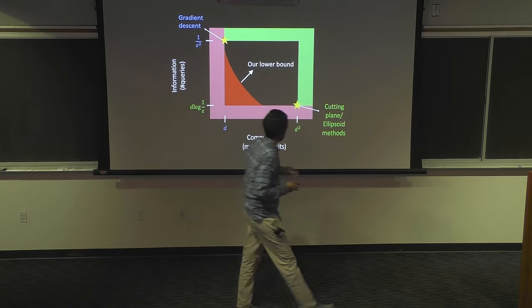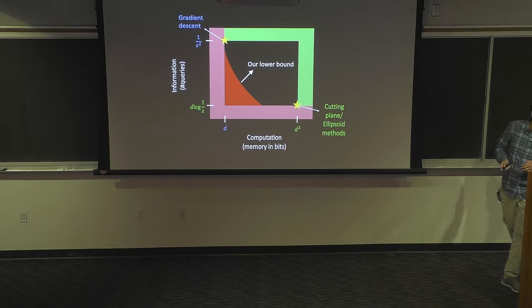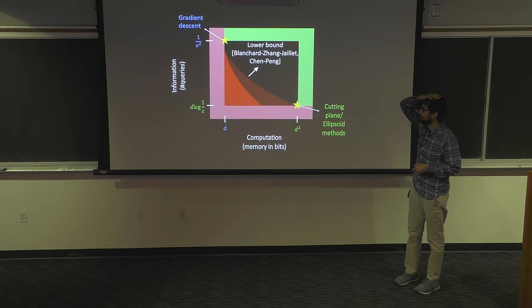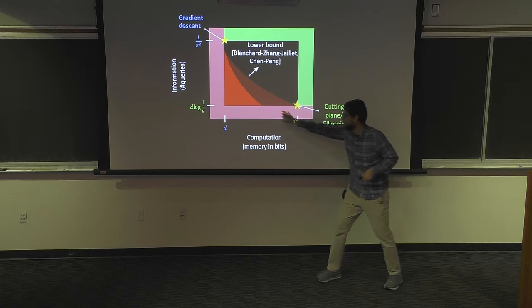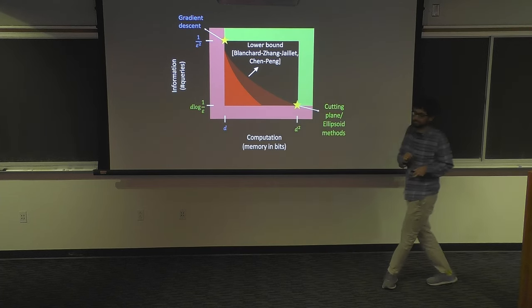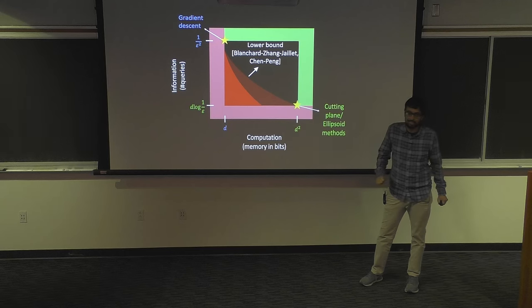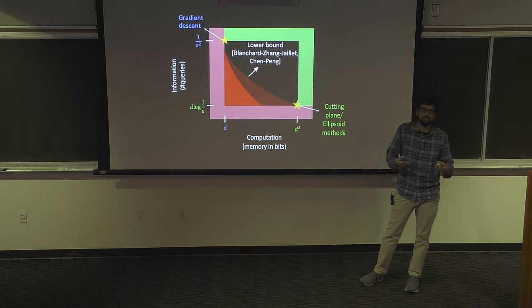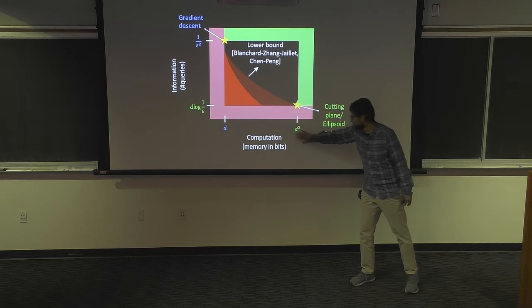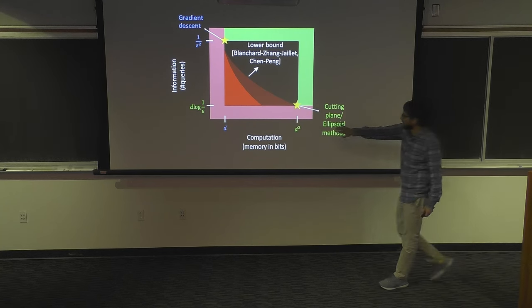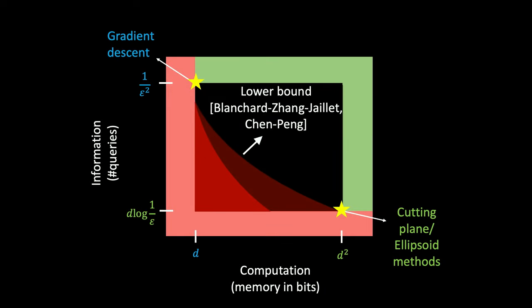That's all I'll cover about the proof. Some very interesting follow-up work has improved the lower bound along certain regimes. Follow-up work showed that D^1.25 memory was needed. There's work showing that for any deterministic algorithm, D-squared is needed. And there's also work showing that if you are looking at very small error epsilon — quasi-polynomially small — then even for a randomized algorithm, D-squared is needed. So at this point, we know that these methods are near-optimal: you cannot hope to get the optimal query complexity unless you actually use D-squared memory.